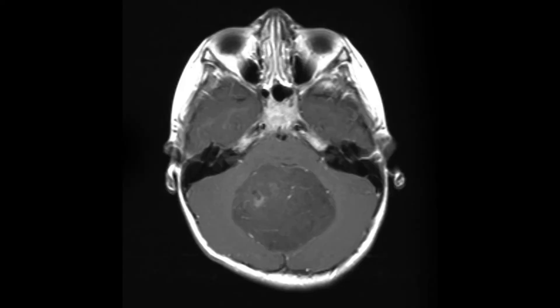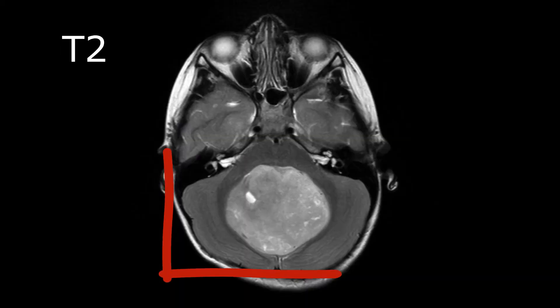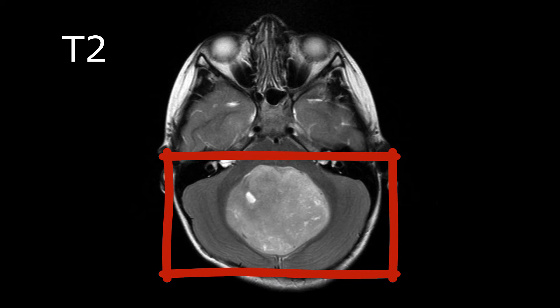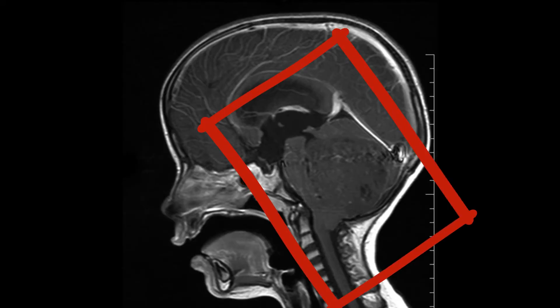Here you can see a T1-weighted image — you can see the large mass, it has completely obstructed the fourth ventricle and it is pushing into the brainstem. And here is a sagittal view showing how big the mass is.